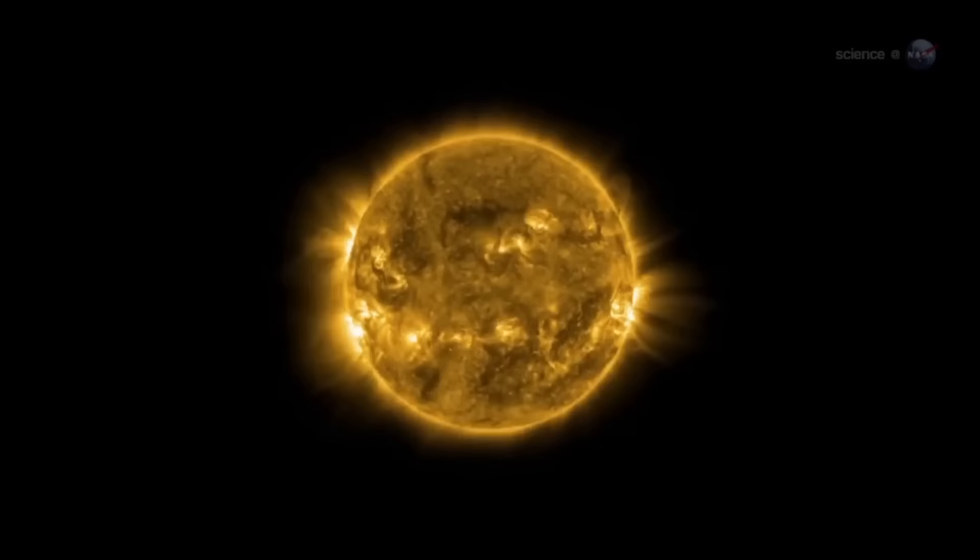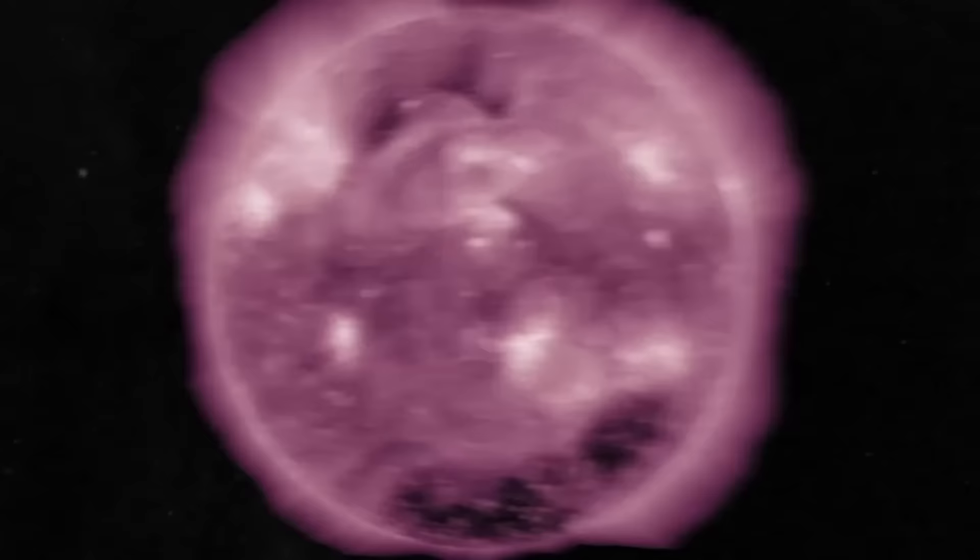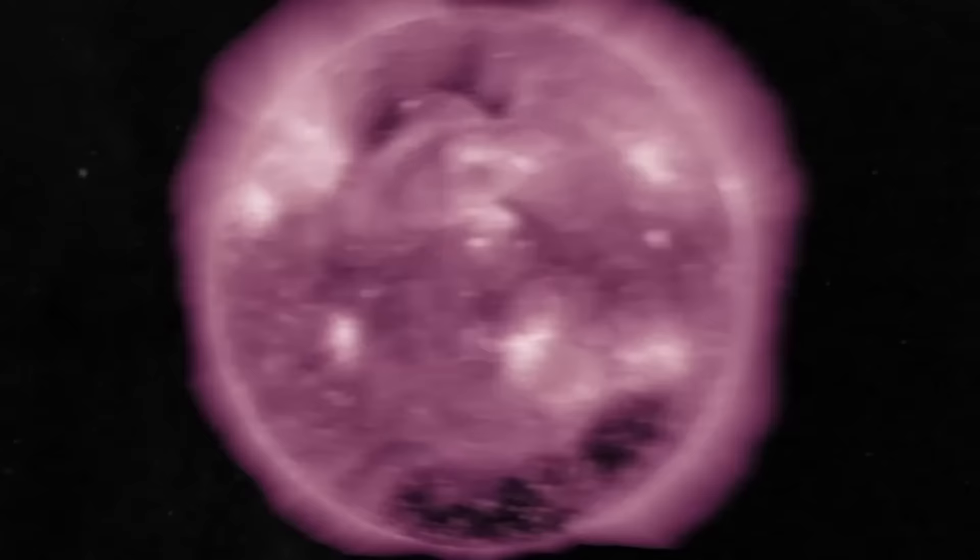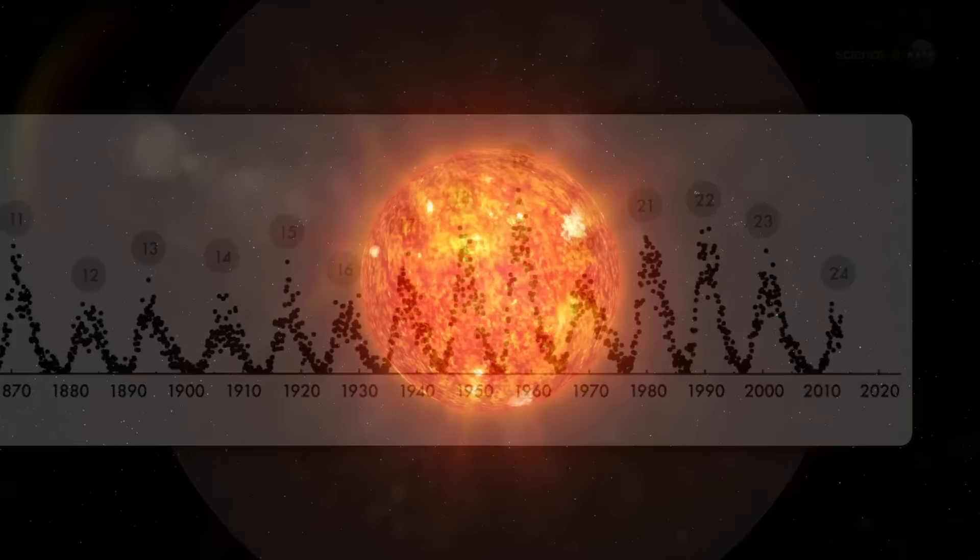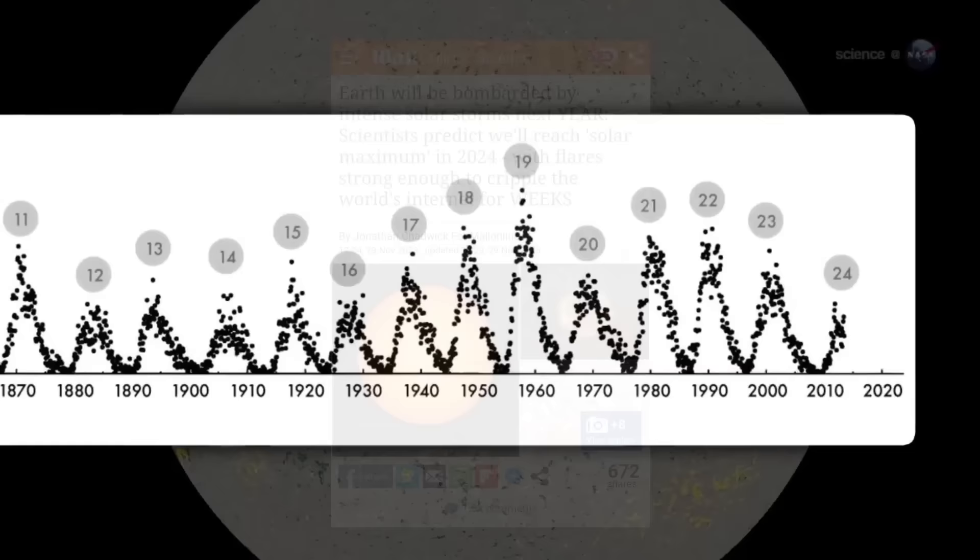Researchers have discovered a new relationship between the sun's magnetic field and its sunspot cycle that can help predict when the peak in solar activity will occur. NASA previously predicted that the next solar maximum would begin in late 2025. Unfortunately, a new study reveals that this solar maximum is coming sooner than expected, most likely in early 2024.